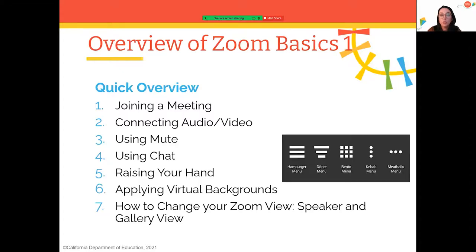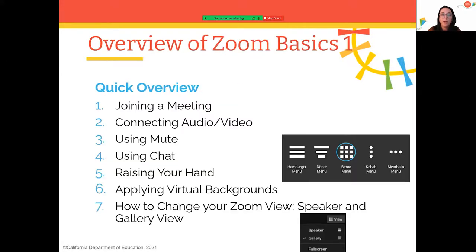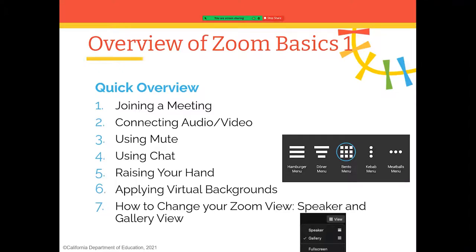To change your view, go to the right side menu of your screen and find the little bento box icon next to where it says 'View.' Click that, and you'll have two options: speaker view or gallery view. In speaker view you'll just see me, and in gallery view you'll see everybody in the training. On a cell phone you won't see that option, but on a tablet you can swipe left or right to find it.